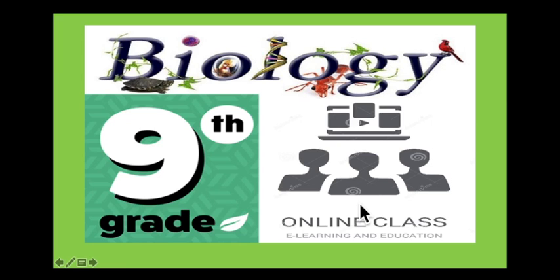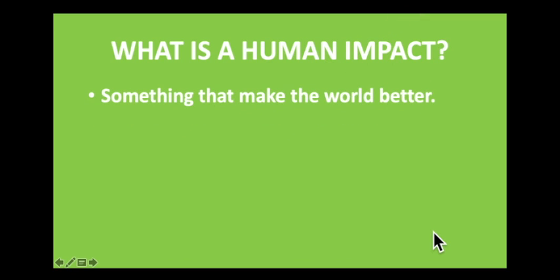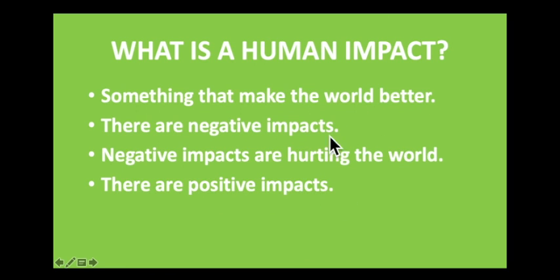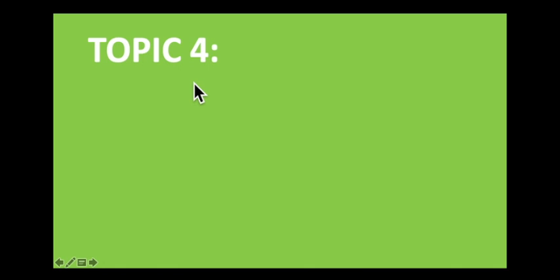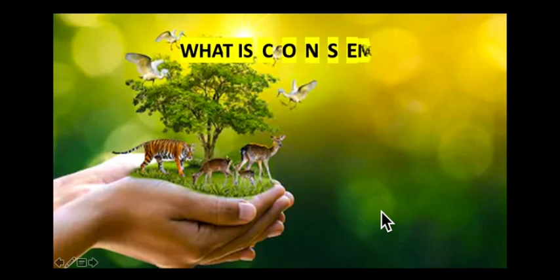Hello everyone, hope all of you are doing well. Welcome back to your biology class. I want to ask you one question: what does human impact on their environment mean? This impact is of two types - there are negative impacts that hurt the world, like pollution we discussed in our last lecture, and there are positive impacts of humans on their environment that are actually helping the world. Today our topic is based on human's positive impacts on their environment. So let's get started - topic number four of this chapter: conservation.